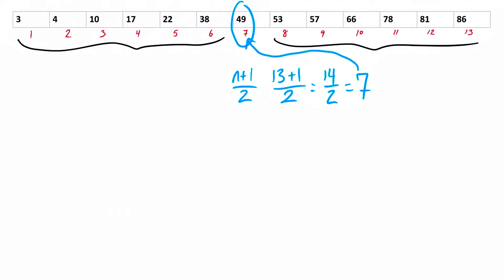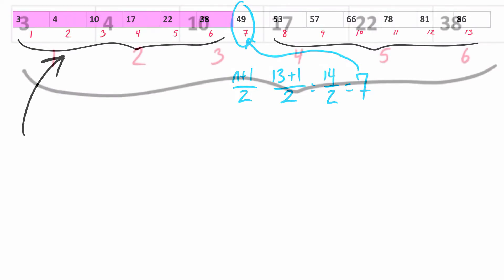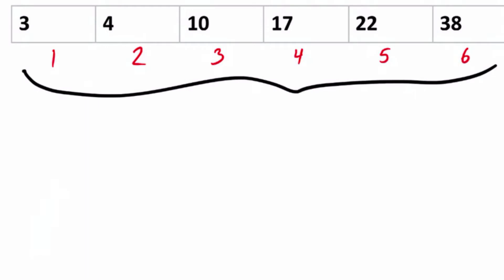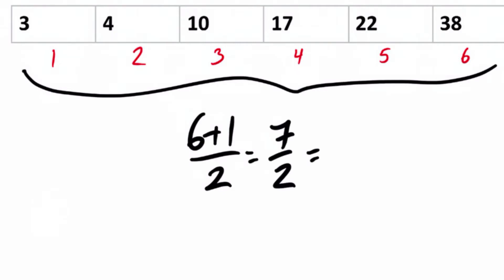So if I'm looking for 49 and the first number I check is 49, then we found our value. When I was trying to figure this out by hand, I was confused about what to do with a list containing an even number of values. Using the formula for finding the median, if I have six values, I should look at position 3.5, because 6 plus 1 divided by 2 equals 3.5. But there is no value at position 3.5, so I decided I'm always going to round down to position 3.